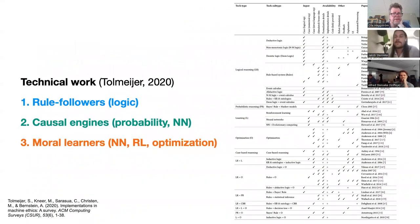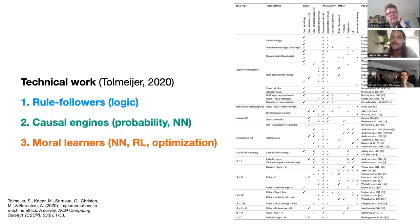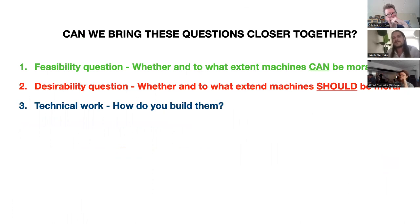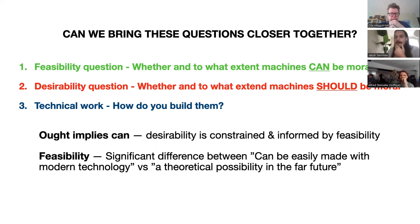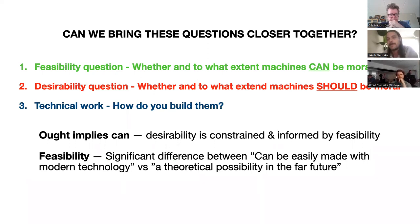This is just a glimpse of some of the technical work from a great survey by Tolmeier from 2020. I divide all the technical work into three kinds of moral machines: the rule followers, which follow some sort of logic; the causal engines, which follow probability theory or causal reasoning; and the moral learners, which use machine learning more broadly. My hope is to bring these questions closer together, because what we think about desirability should be constrained and informed by feasibility. We need more nuance about feasibility — there's a big difference between something that can be made easily today versus a mere theoretical possibility in the far future.